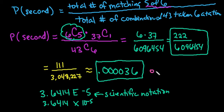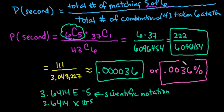And then if you wanted to express it as a percent, that means that it's 0.0036% of the time. So this occurs way less than 1% of the time. It's almost 0% of the time, which is why it's so unlikely to be able to match 5 of the 6 numbers.